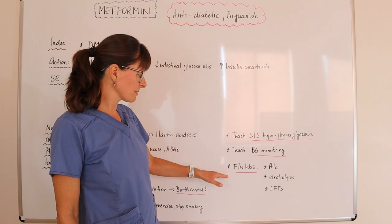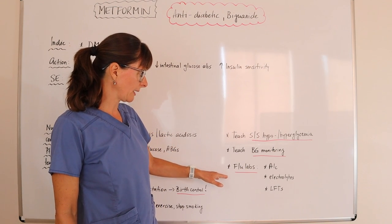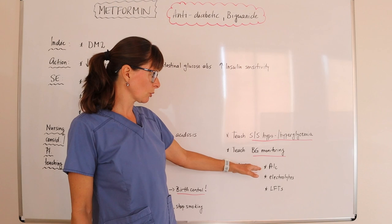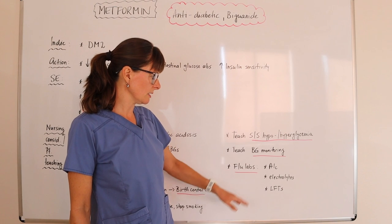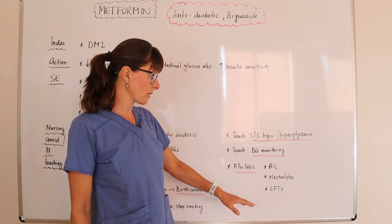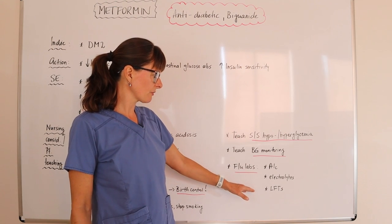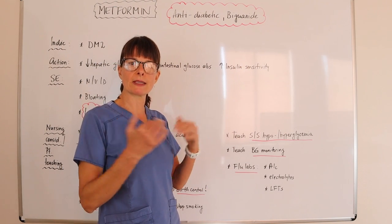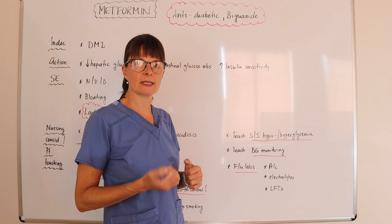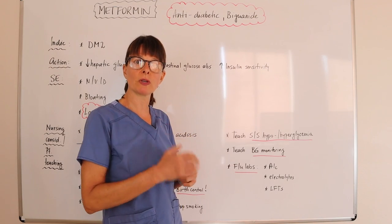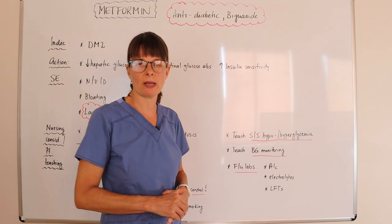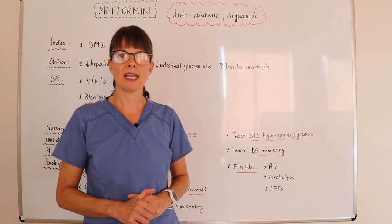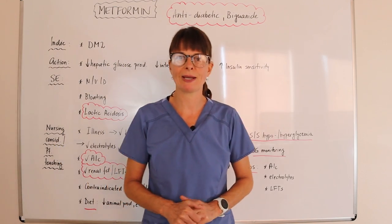Follow-up labs that should take place include a hemoglobin A1C as well as electrolytes and liver function to make sure everything remains in a steady state and hopefully that hemoglobin A1C is improving.